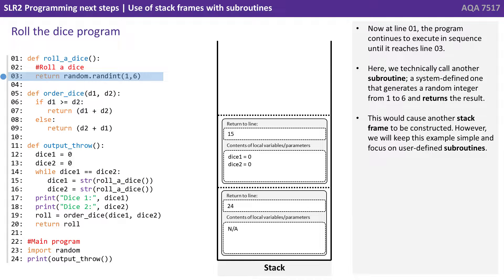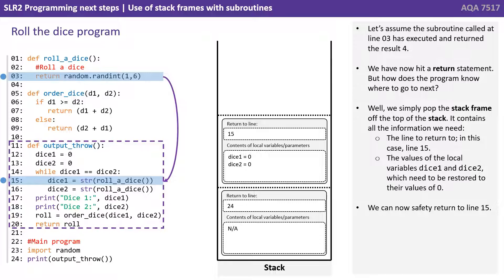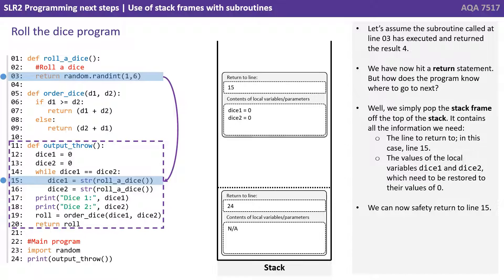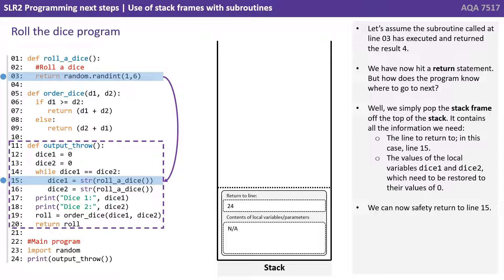Now at line 1, the program continues to execute in sequence until it reaches line 3, where it calls a system defined subroutine that generates a random integer from 1 to 6 and returns the result. This would cause another stack frame to be constructed; however, we'll keep this simple and only focus on our user defined subroutines. Let's assume the subroutine called at line 3 executes and returns the result 4. We've now hit a return statement. We simply pop the stack frame off the top of the stack, and it contains all the information we need.